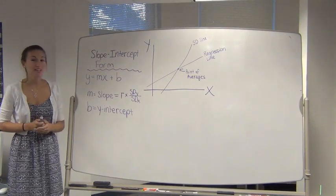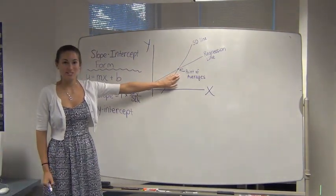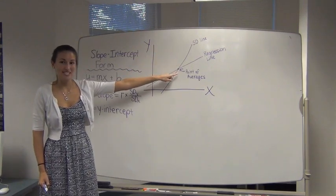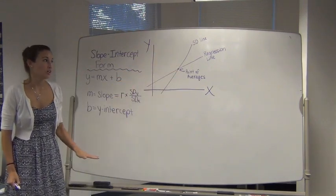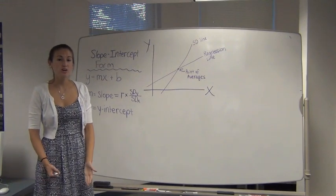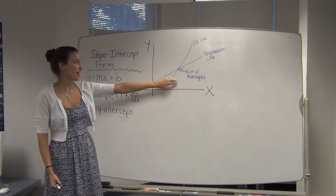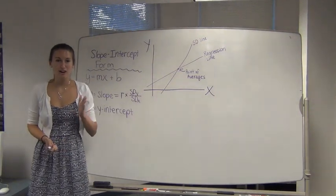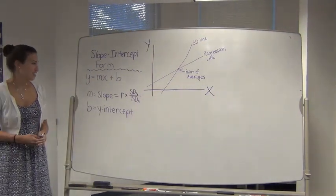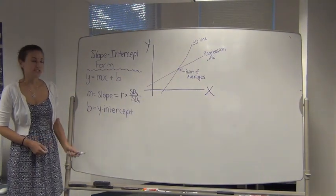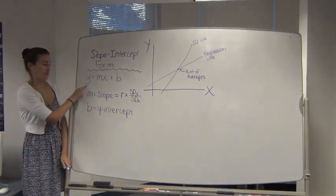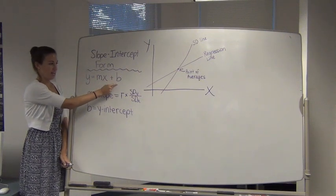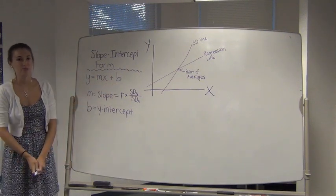The point of averages, or as you can see on this graph, where the sd line and the regression line intersect, is always going to be on the regression line. So we'll always know that point - the average value of x and the average value of y, even if we're not given a list of x's and y's. So that's how we're going to solve for our y-intercept. We're going to plug in the average value of y, the average value of x, and then our slope. So we'll only have b, our y-intercept, remaining.